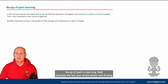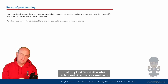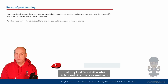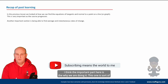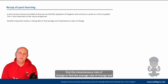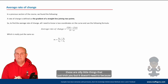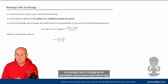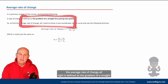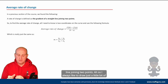Recap of past learning: the last part of the lesson was finding tangents and normals to curves, building on a massive section previously on differentiation — what it is, how to do it, and why we are doing it. The important part is the why. In exams you'll see 'find the instantaneous rate of change' or 'find the average rate of change.' The average rate of change is defined as the gradient of a straight line joining two points.